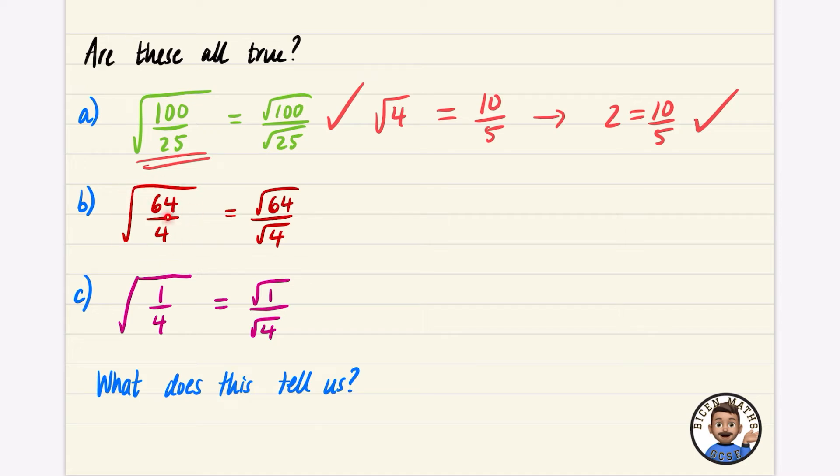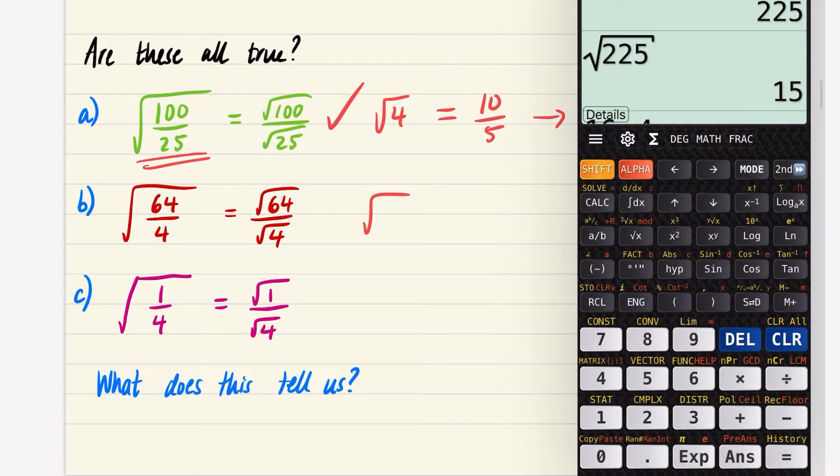Okay, let's have a look at this one. We'll do the 64 divided by 4 inside that square root. And 64 divided by 4, let's quickly get this here. Oh yeah, that's 16.